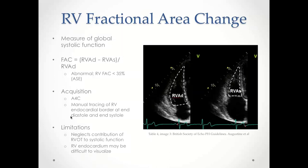RV fractional area change is a global measure of RV systolic function. The formula is: (RV area in diastole minus RV area in systole) divided by RV area in diastole. Anything less than 35% is considered abnormal. Limitations include difficulty visualizing the endocardium and the fact that it does not incorporate the RVOT contribution to RV systolic function.